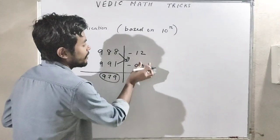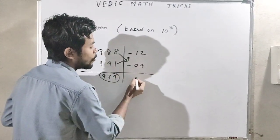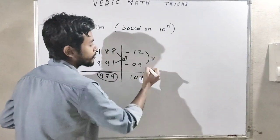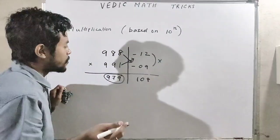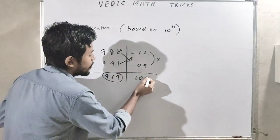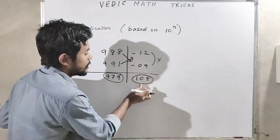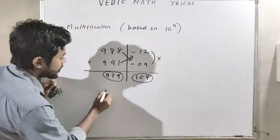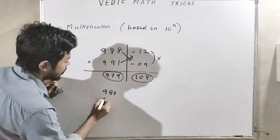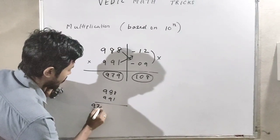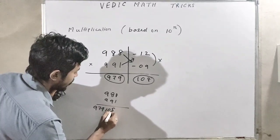Next, minus 12 into minus 9, how much do we get? 108. Here we have to multiply. Also we have to get a 3-digit number here: 108. So 988 into 991, as a result we get 979108.